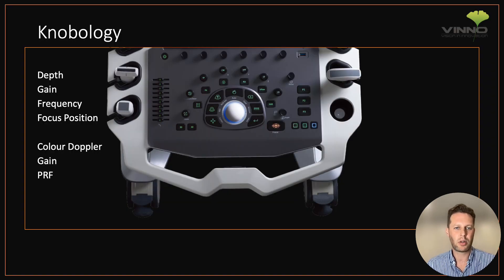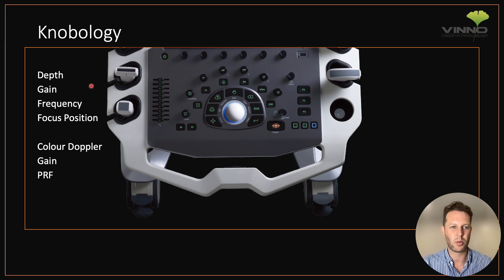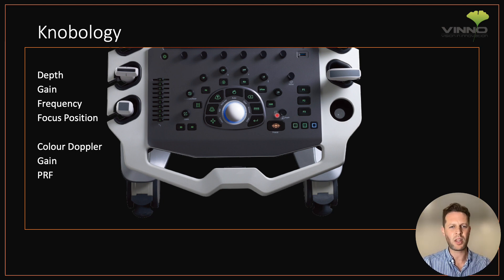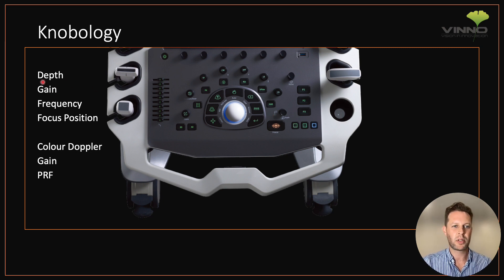The final thing we'll talk about quickly is knobology — that refers to the different knobs you can use to adjust the image. The key things you need to know for aesthetic ultrasound are depth and gain. All ultrasound machines will have a depth knob so that you can frame the image — you want the structures large enough to see clearly, but not so zoomed in that you miss important information. In ultrasound, brightness is called gain, and you can adjust the brightness of the image by adjusting the gain.